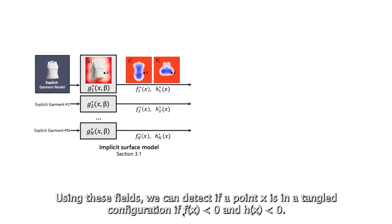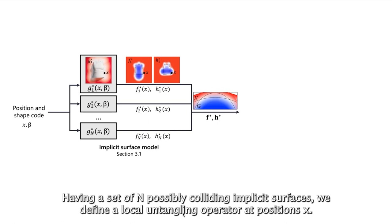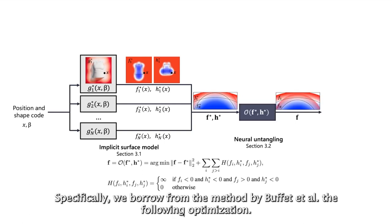Using these fields, we can detect if a point x is in a tangled configuration if f(x) < 0 and h(x) < 0. Having a set of n possibly colliding implicit surfaces, we define a local untangling operator at positions x. Specifically, we borrow from the method of Buffet et al. the following optimization.